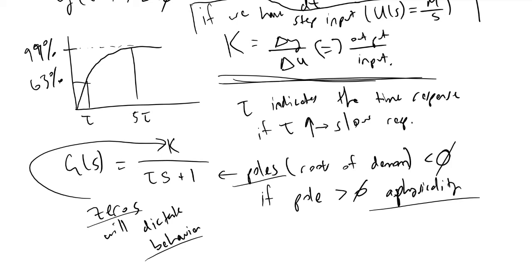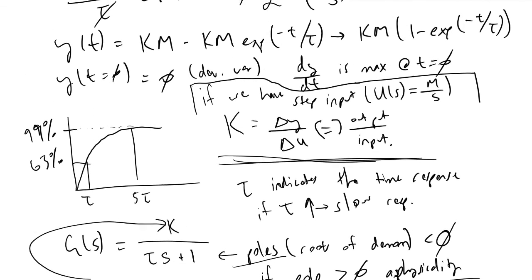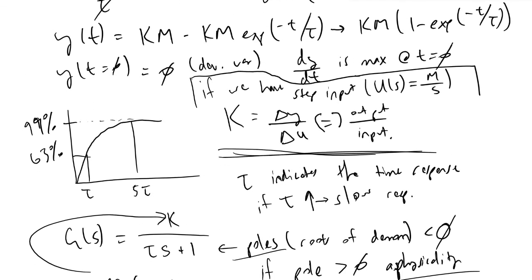To summarize: poles represent the physicality or aphysicality of your system, and zeros dictate how the graph behaves as it reaches the new steady-state value. If you have one zero, it indicates the graph will change direction on its way to the new steady-state value. This concludes the introduction to first-order dynamic systems and how to derive the time-domain functions that represent them.